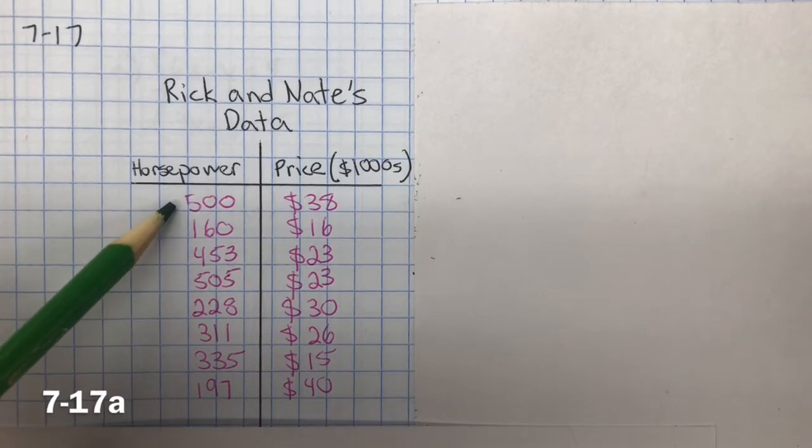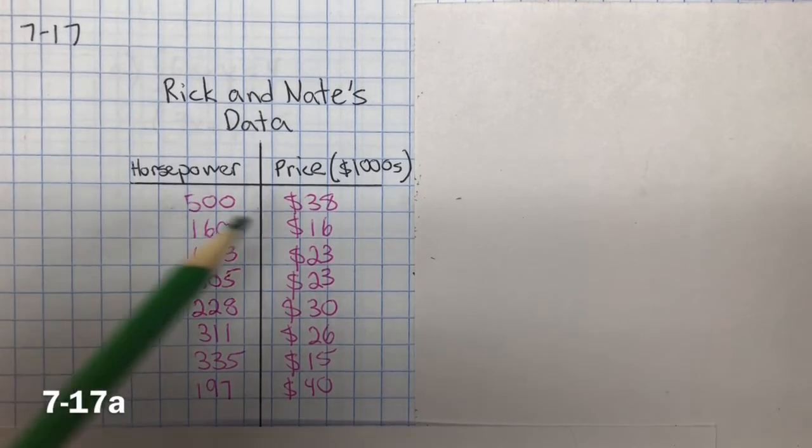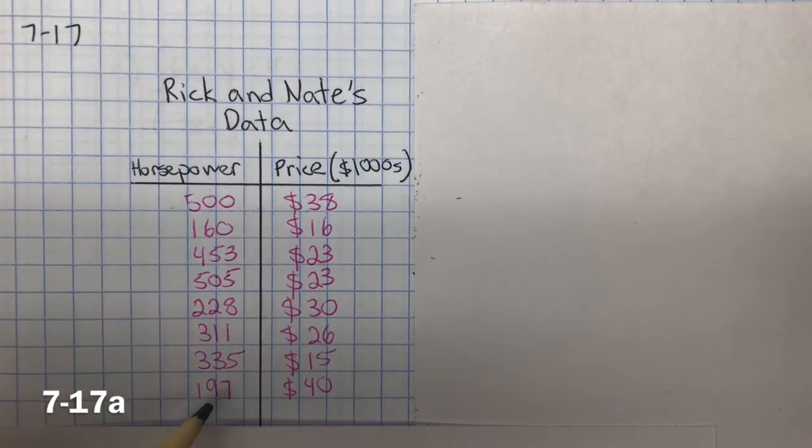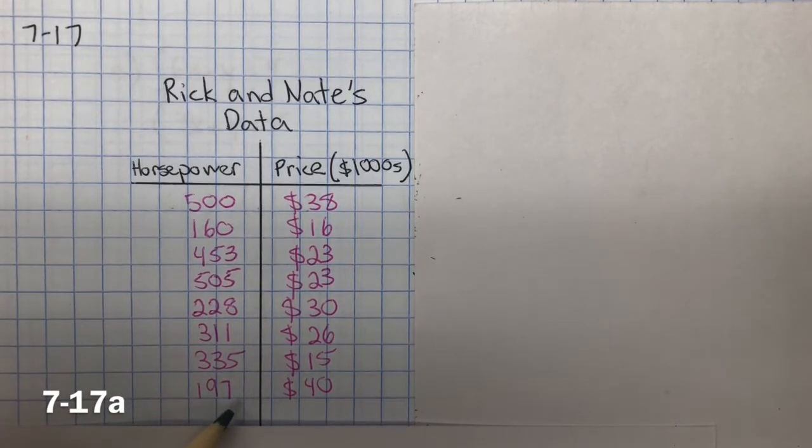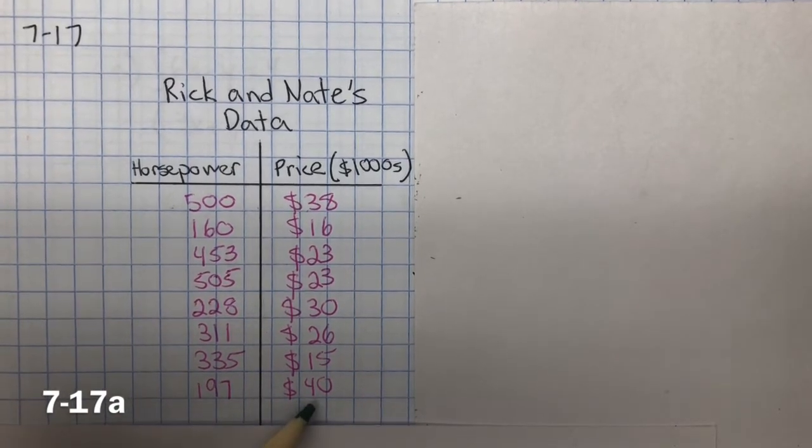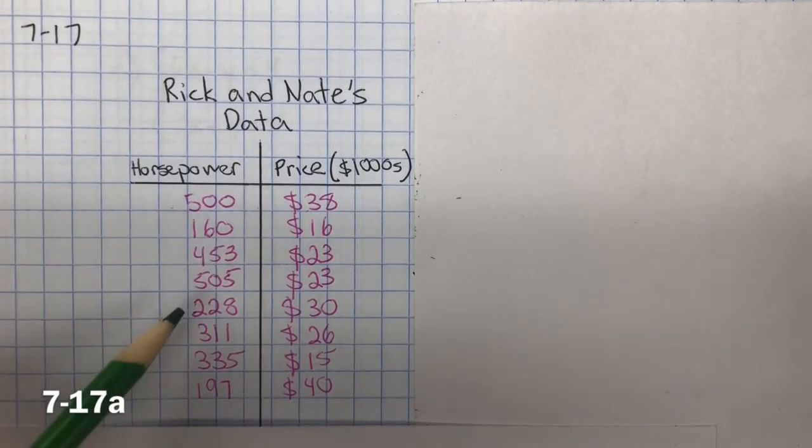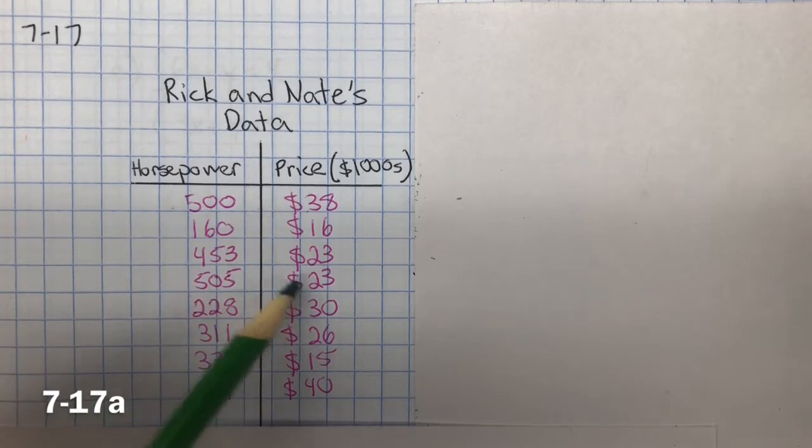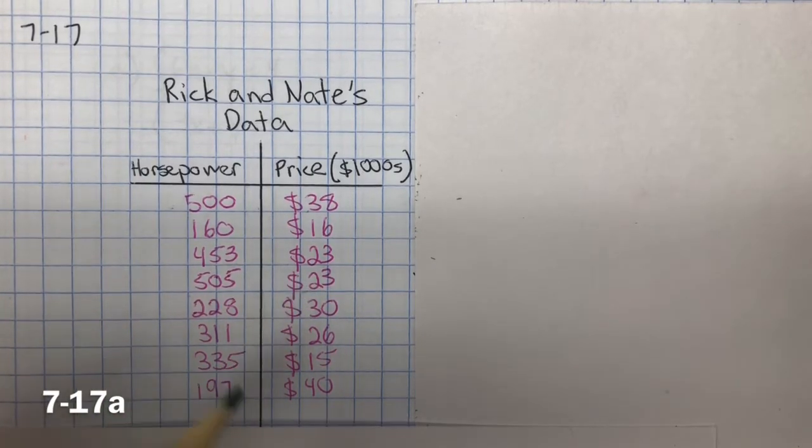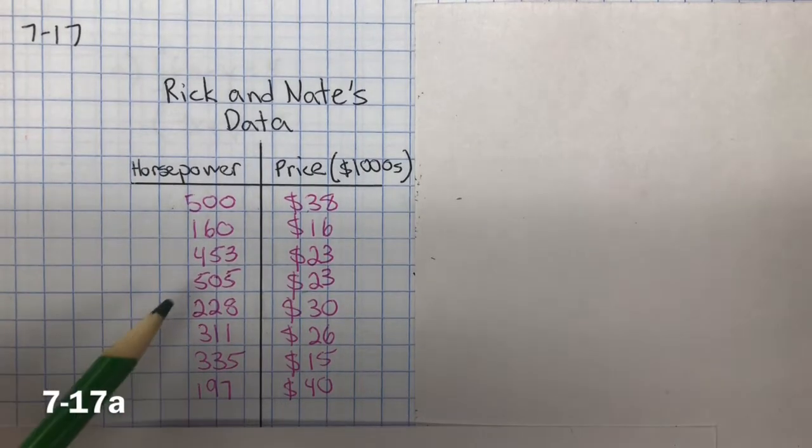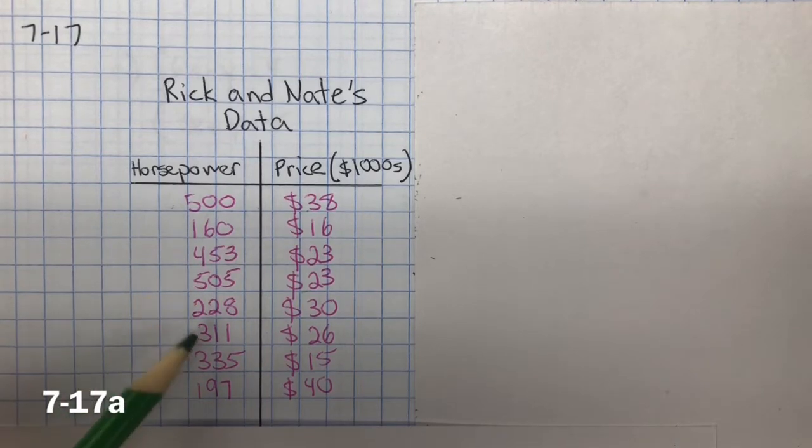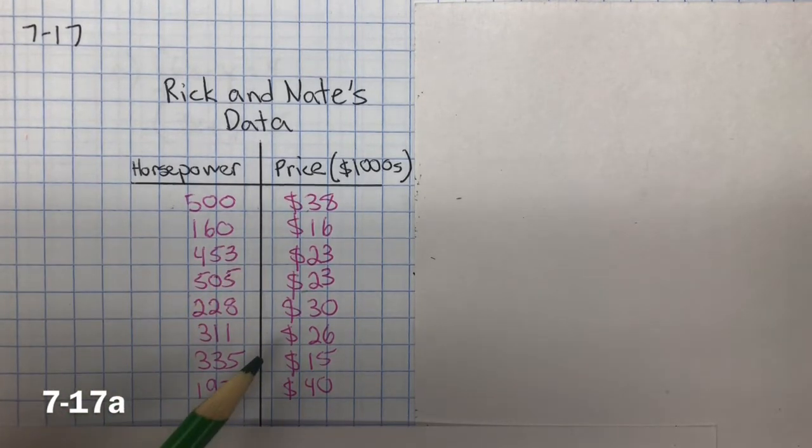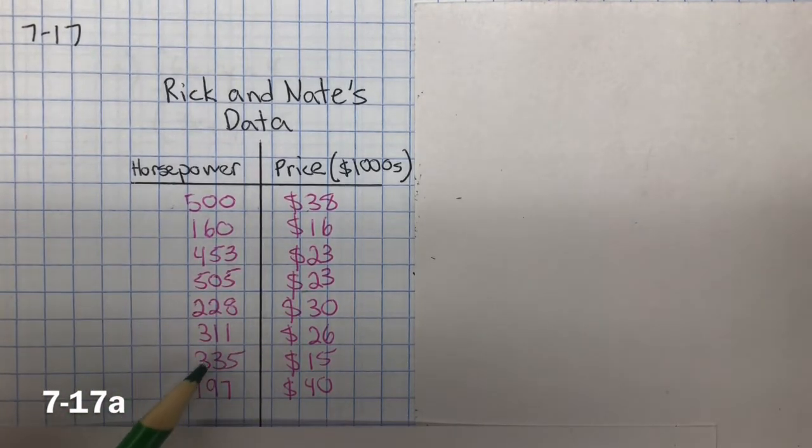Well, if you look at 500 horsepower, it costs $38,000. But here, 197 horsepower costs $40,000. It actually costs more. And here's 505, that's $23,000. If you keep looking at this table, what I realize is that I don't see any trend that more horsepower is going to cost more money.